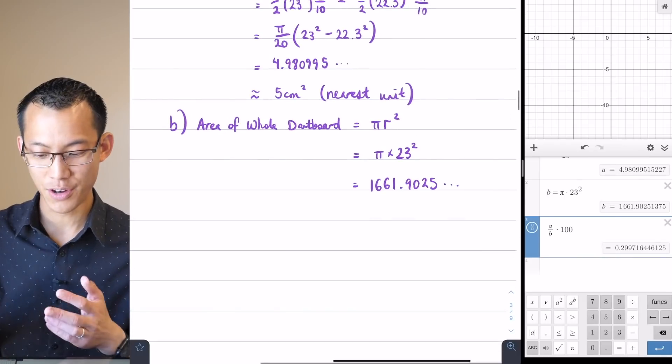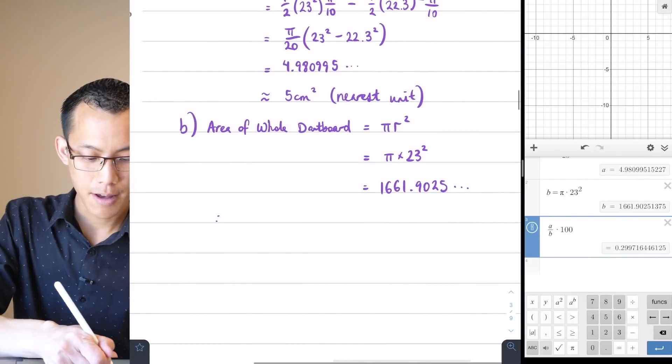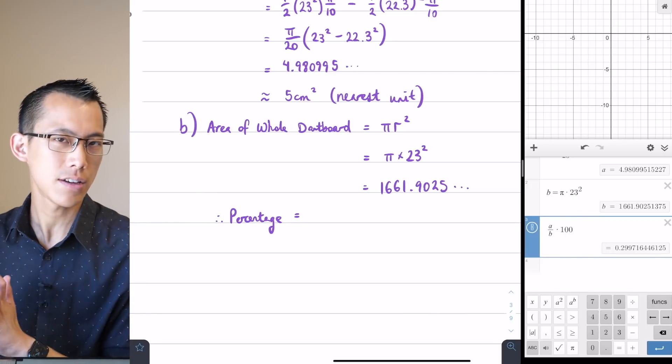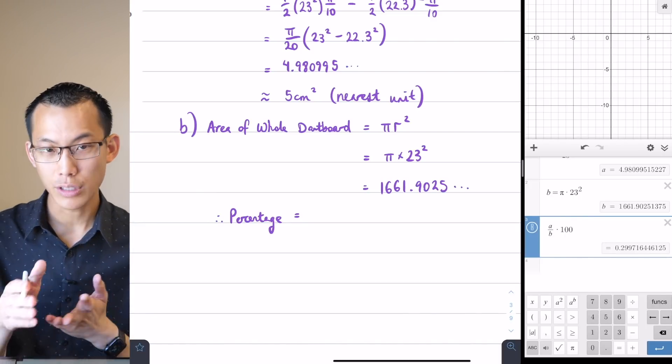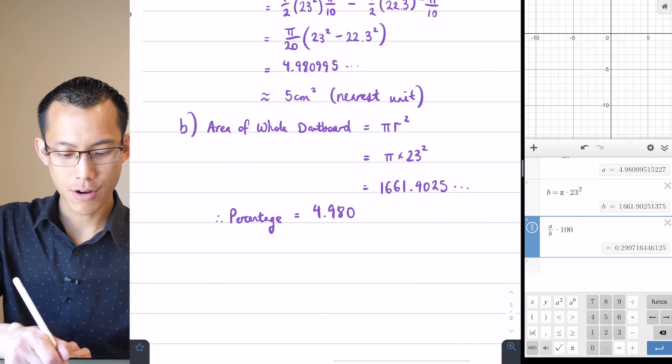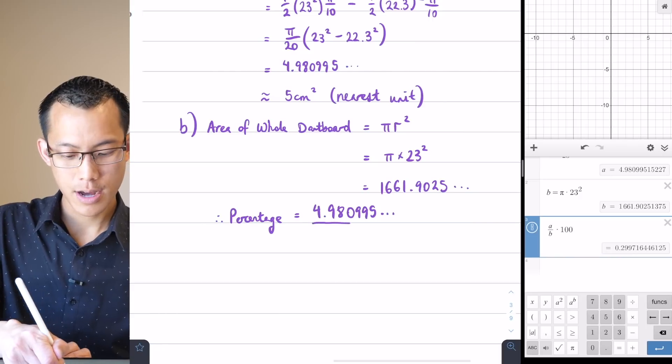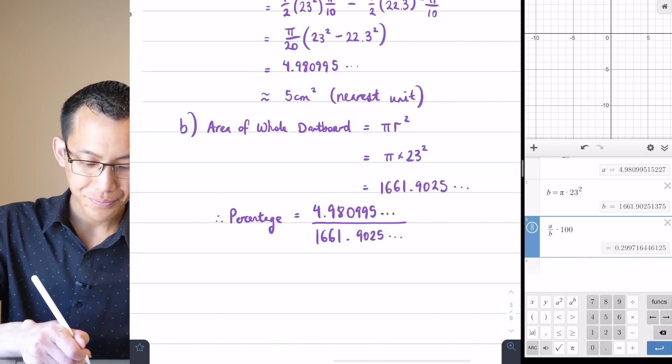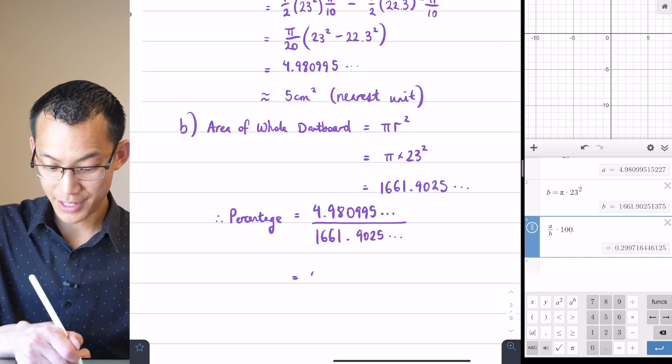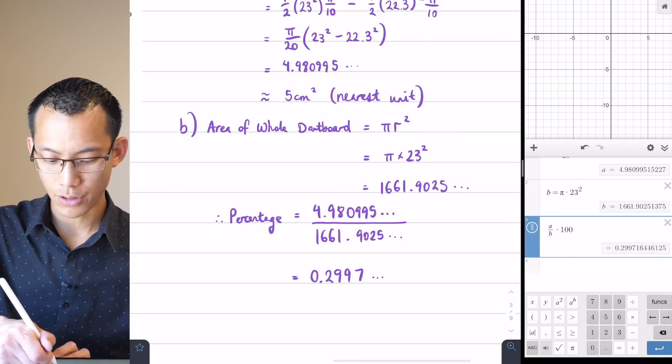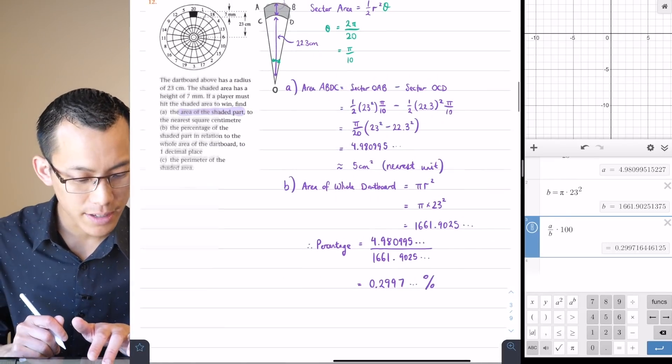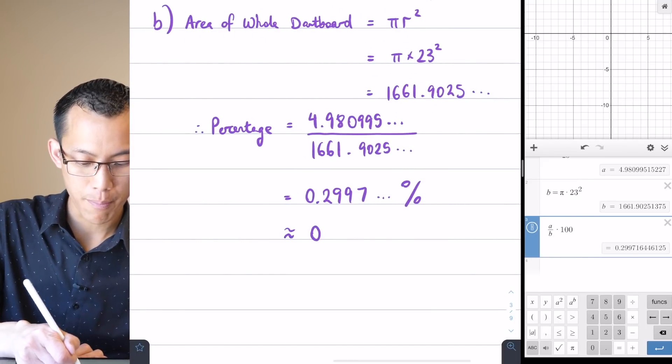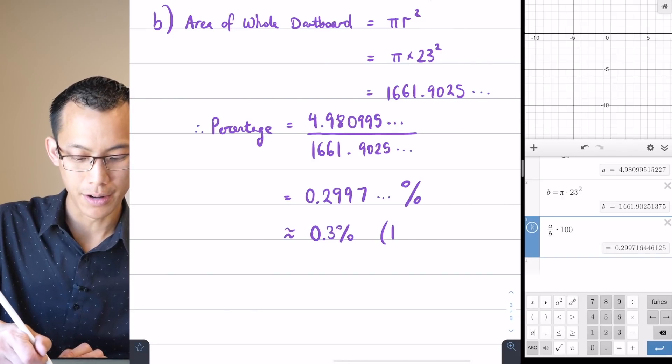I get, this is the percentage. I can say percentage equals, and I would, because all of this calculation that I've just done is kind of hidden from my working because it's all in the calculator. So I would actually put in these numbers that I used to calculate it. I'll go 4.980995... I'm going to divide by the total area that I just worked out, 1661.9025... And what I'm getting is 0.2997... percent. And they're asking for the percentage to 1 decimal place. So therefore, this is going to round to 0.3% to 1 decimal place.